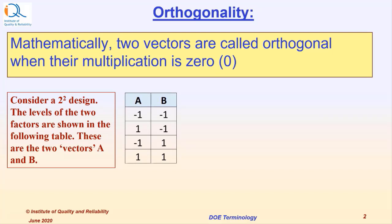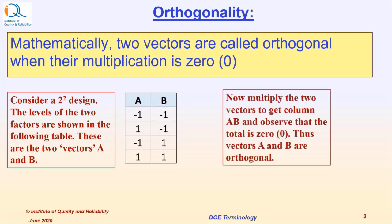Consider a 2 to the power 2 design. The levels of the two factors are shown in the following table. These are the two vectors A and B. Now multiply the two vectors to get a column AB and observe that the total is zero. Thus vectors A and B are orthogonal to each other.